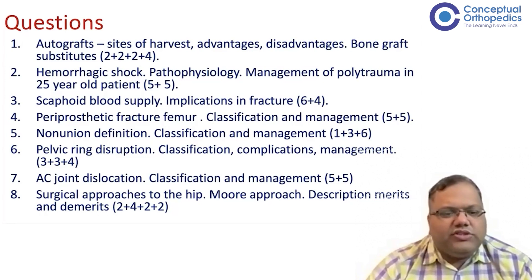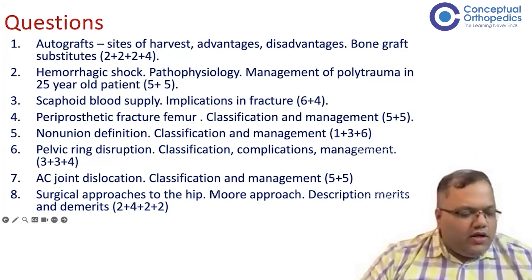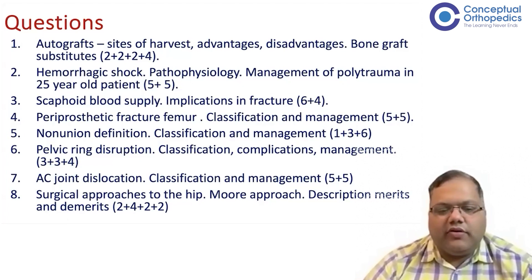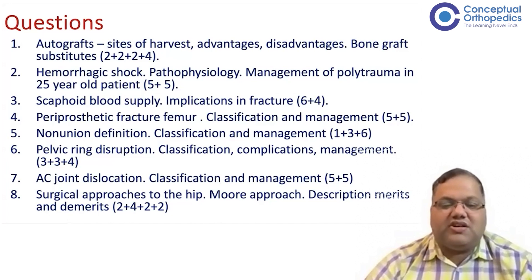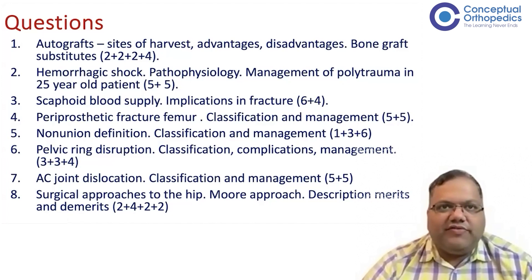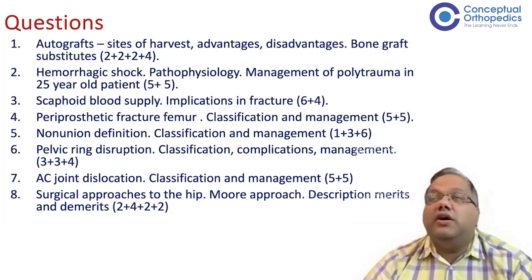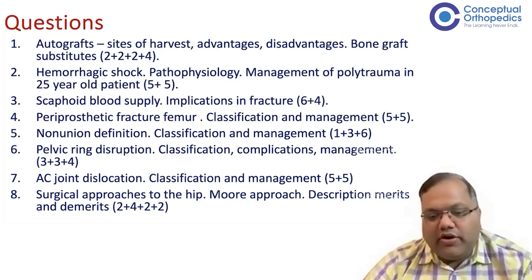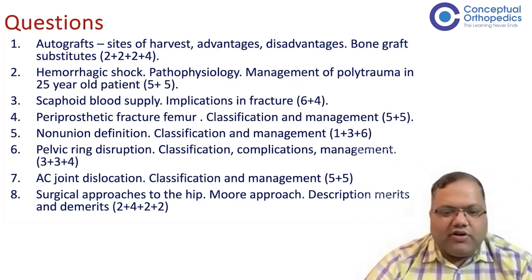The general feedback from students was that this year's theory paper was much easier compared to many previous years. Most questions were very well known, so students felt they needed to write significantly more points. However, all questions have sub-groupings of marks, so they are very specific. No matter how much extra you write, if a sub-mark is two, the maximum you'll get is two. You have to be intelligent in looking at the sub-grouping of marks to decide how much to write — some students couldn't attempt all questions despite knowing them well due to poor time management.